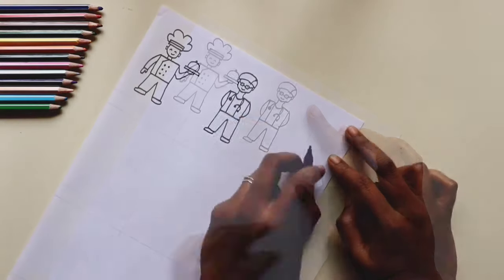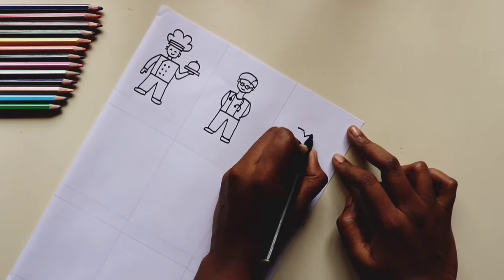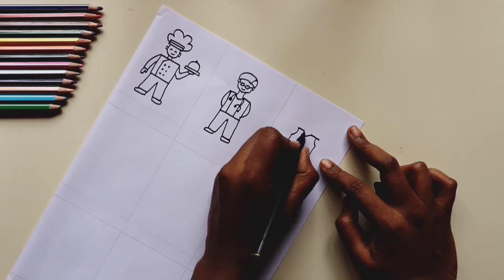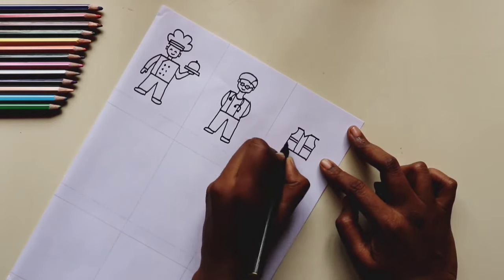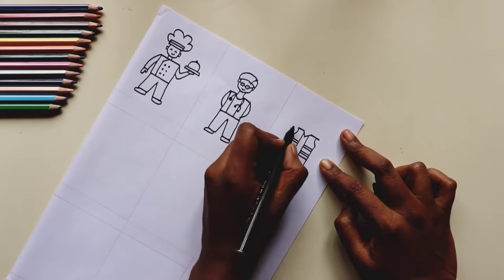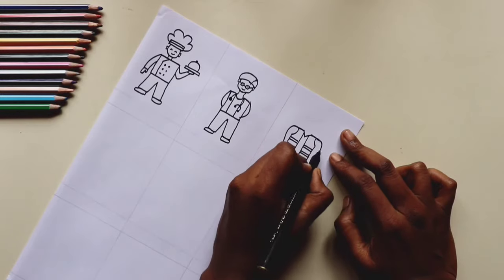The next one is a construction worker. We're going to start off by drawing a coat which has many stripes which is going to be orange and yellow colored, then we'll give him a hat and that's again going to be striped.